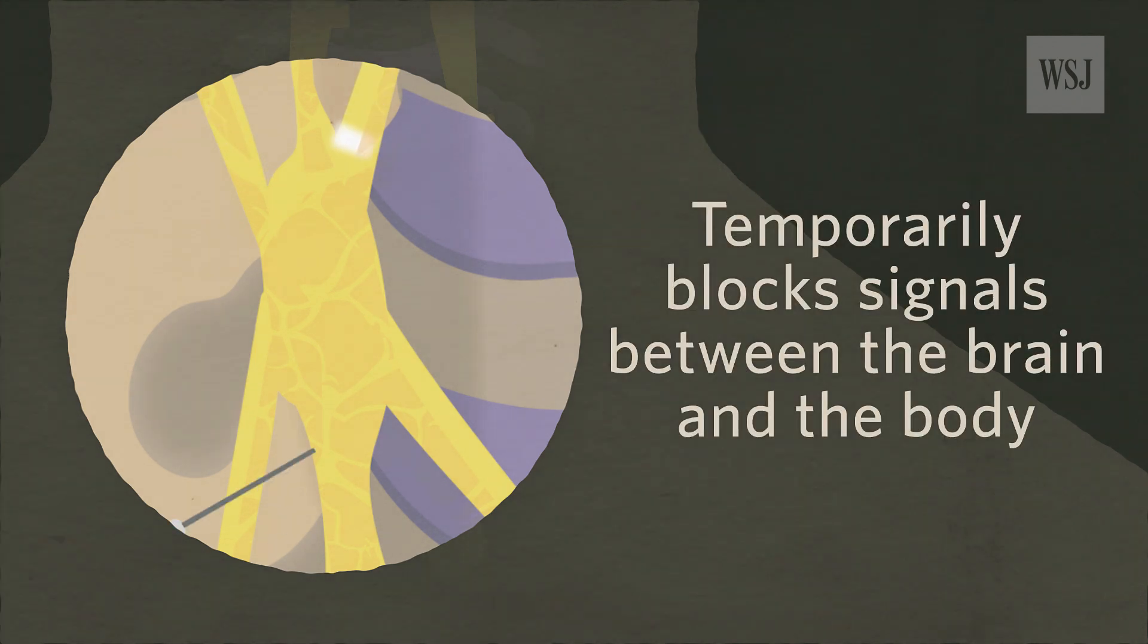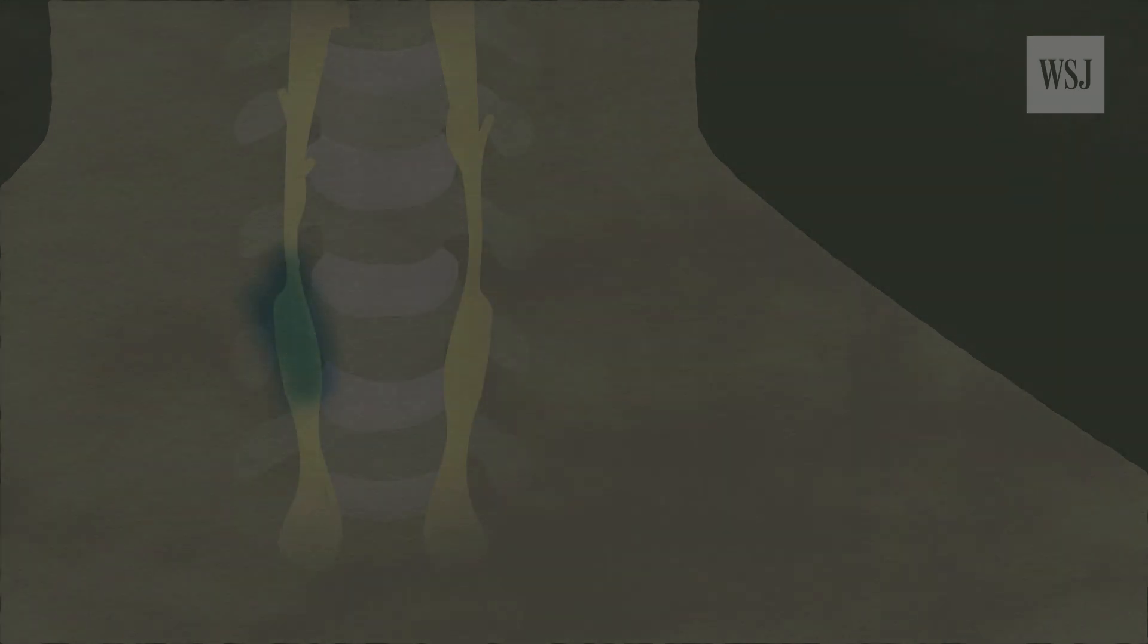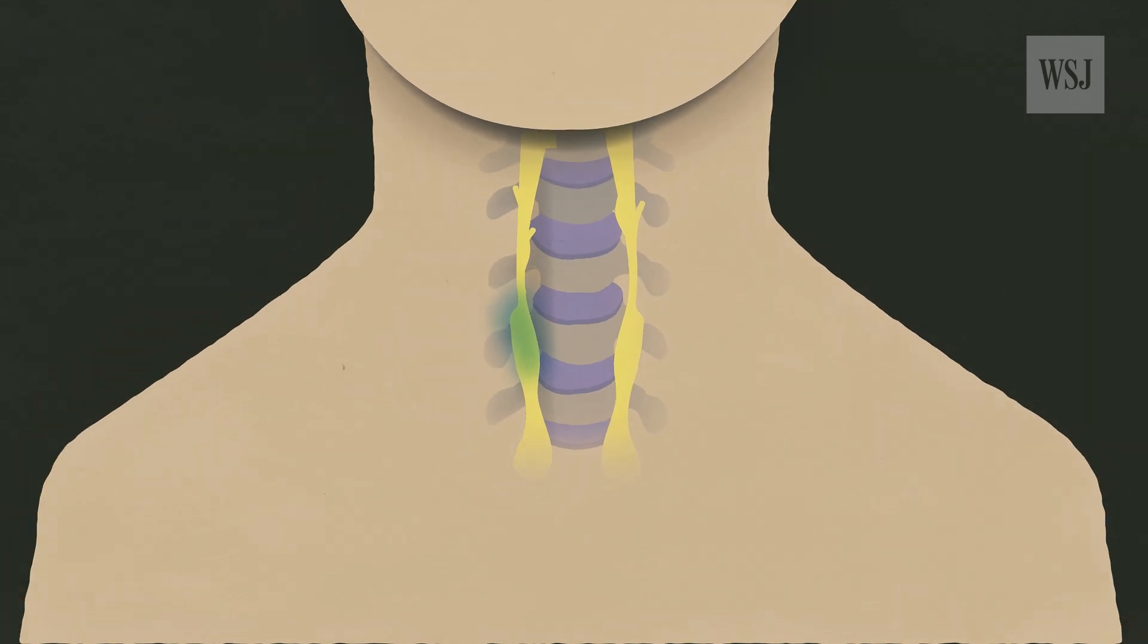The SGB injection temporarily blocks signals between the brain and the body. The precise mechanism for how this assists with PTSD symptoms is not fully understood, but the SGB seems to reset the sympathetic nervous system.